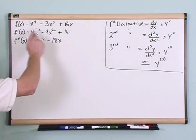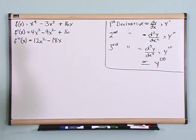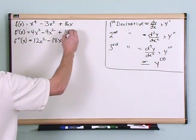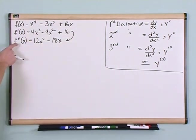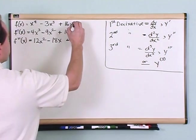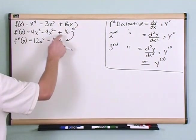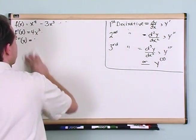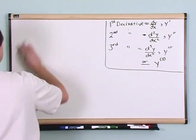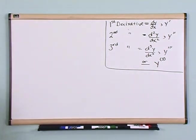Get the first derivative by taking the derivative of the original function, and get the second derivative by taking the derivative of the first derivative. You take the derivative of this to get here, take the derivative of that to get here, and you can keep taking derivatives. You could take the third derivative, the fourth derivative, and so on.